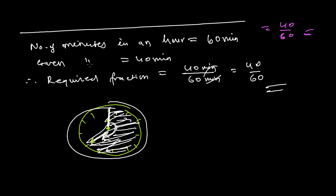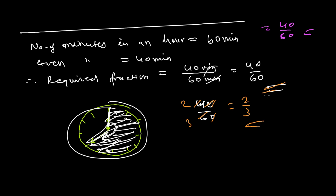If you want to reduce it to lower terms, take 40 over 60 and cancel the zeros, then divide: 2 times 20 is 40 and 3 times 20 is 60, so that simplifies to 2 over 3. But it is also acceptable to write the answer as 40 over 60.